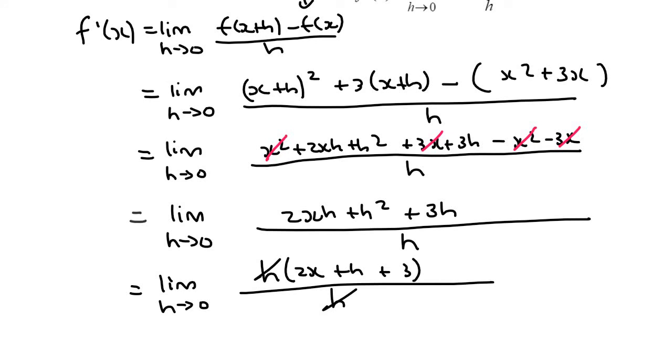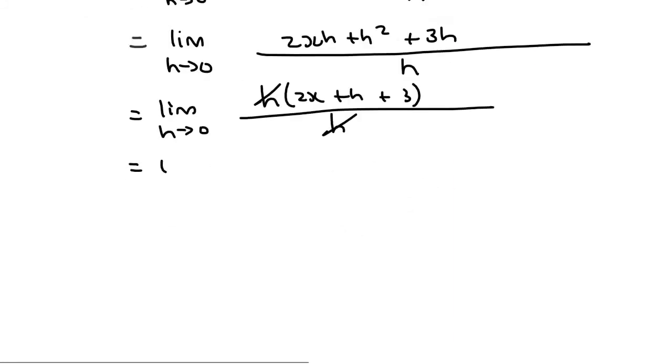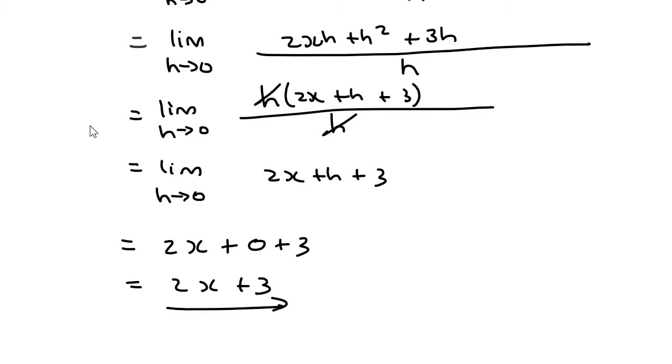When that happens, you can now let h become zero. The reason we couldn't before is because that h would have been at the bottom, and you would have had undefined. So now you can just write it out again if you would like, like this: 2x plus h plus 3. Now we don't have to say limit as h goes to zero, because now we are going to let h go to zero, like that. And our final answer would be 2x plus 3.